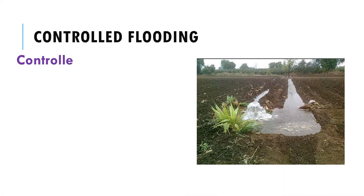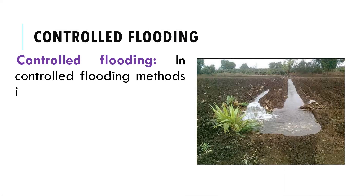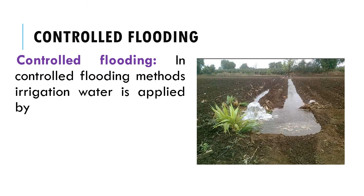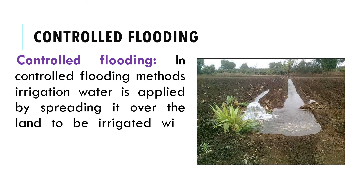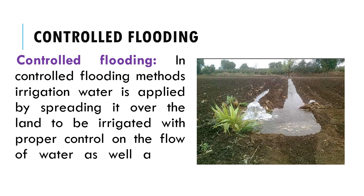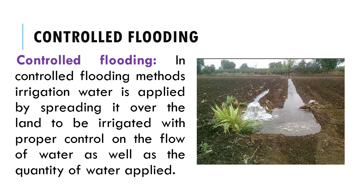In controlled flooding methods, irrigation water is applied by spreading it over the land with proper control on the flow of water as well as the quantity of water applied. All methods of controlled flooding require prior preparation of the land. The land is properly graded and agricultural fields are divided into small units by levees.